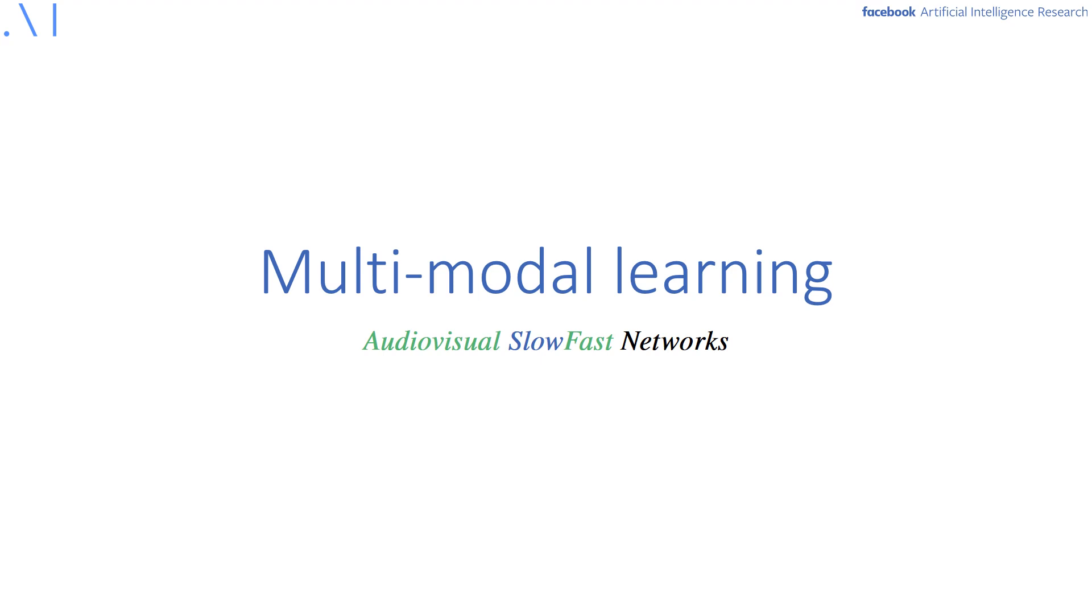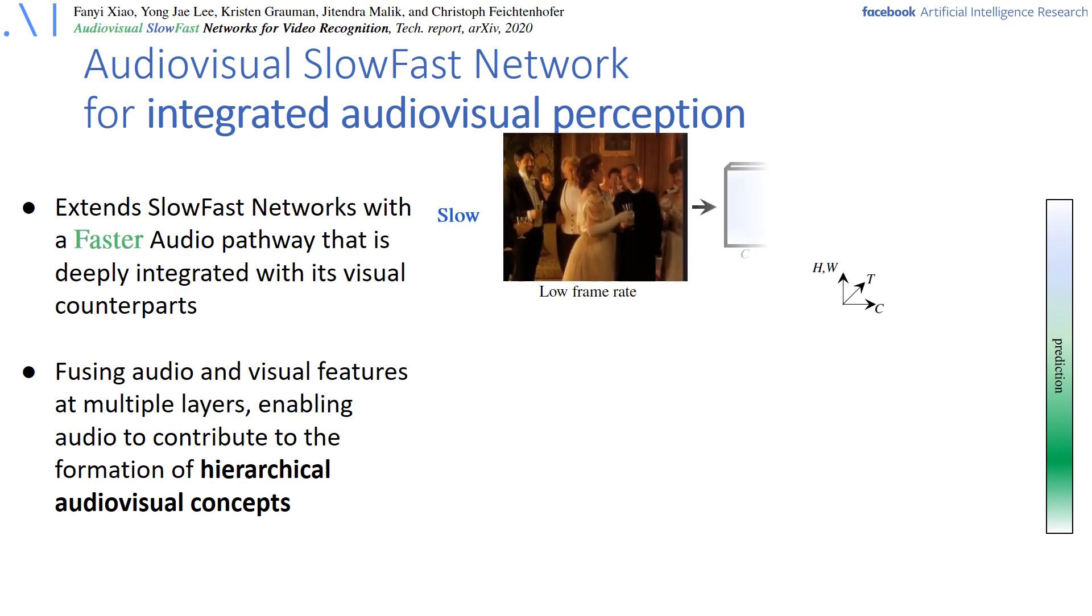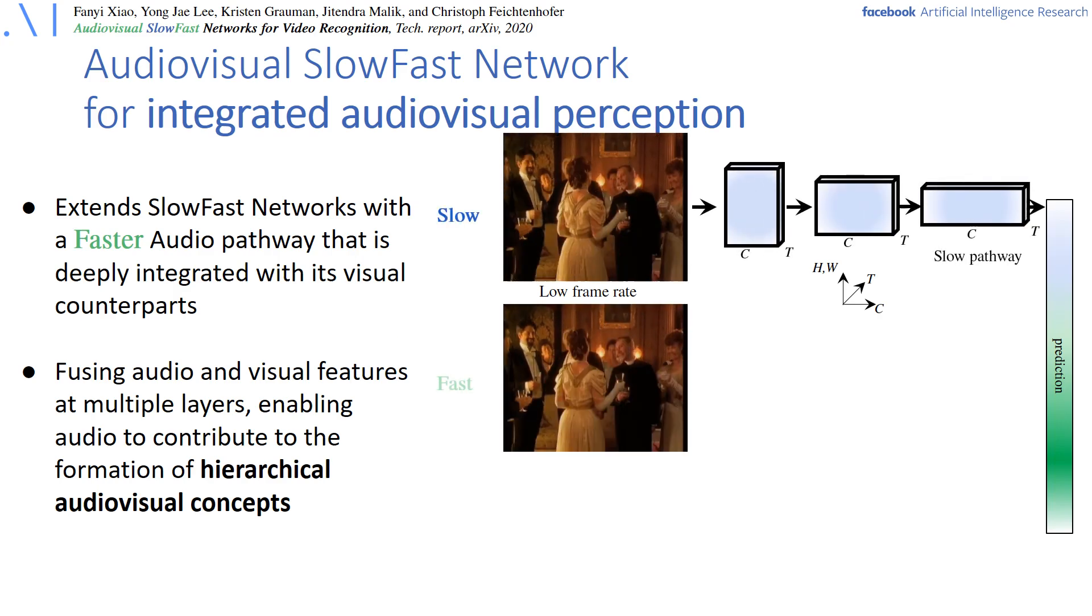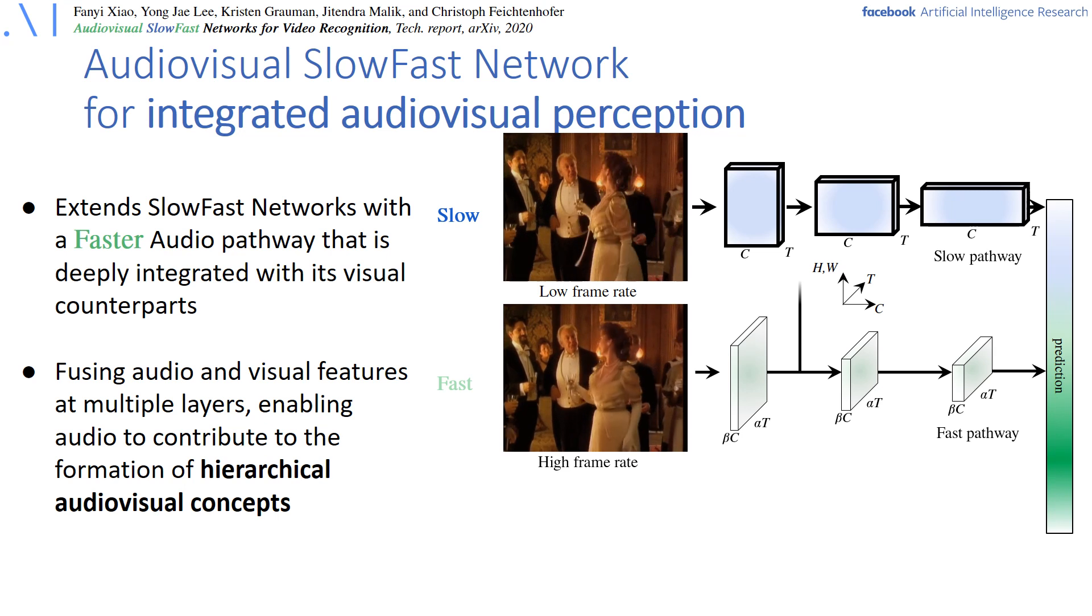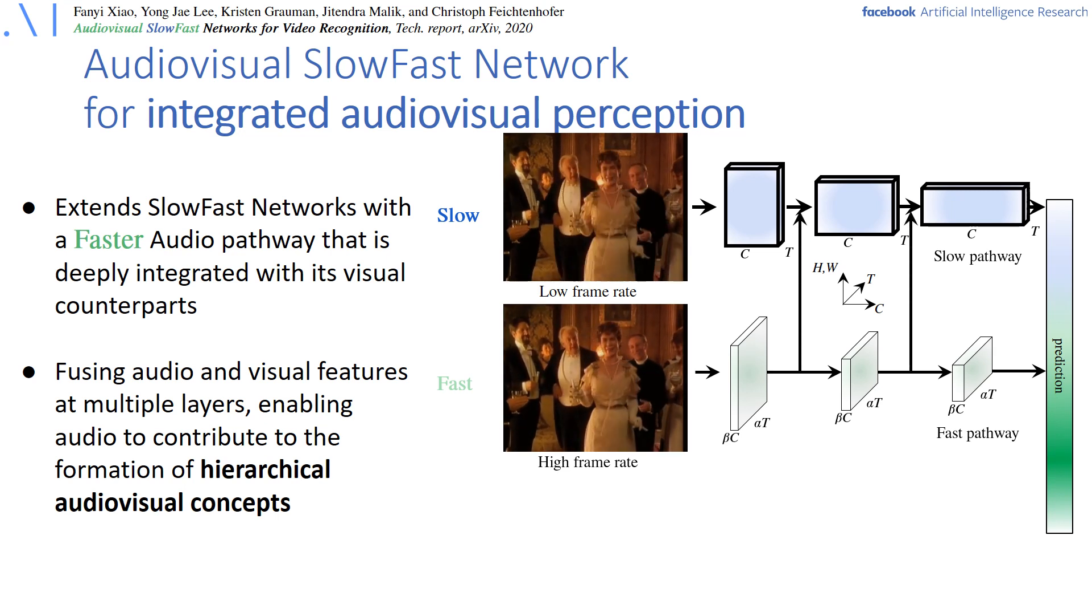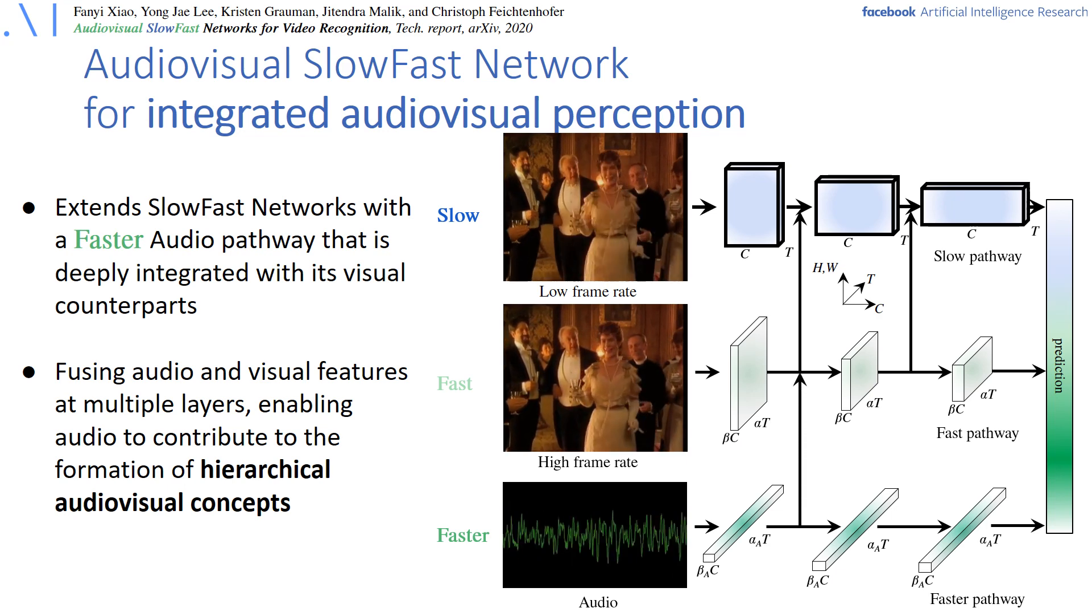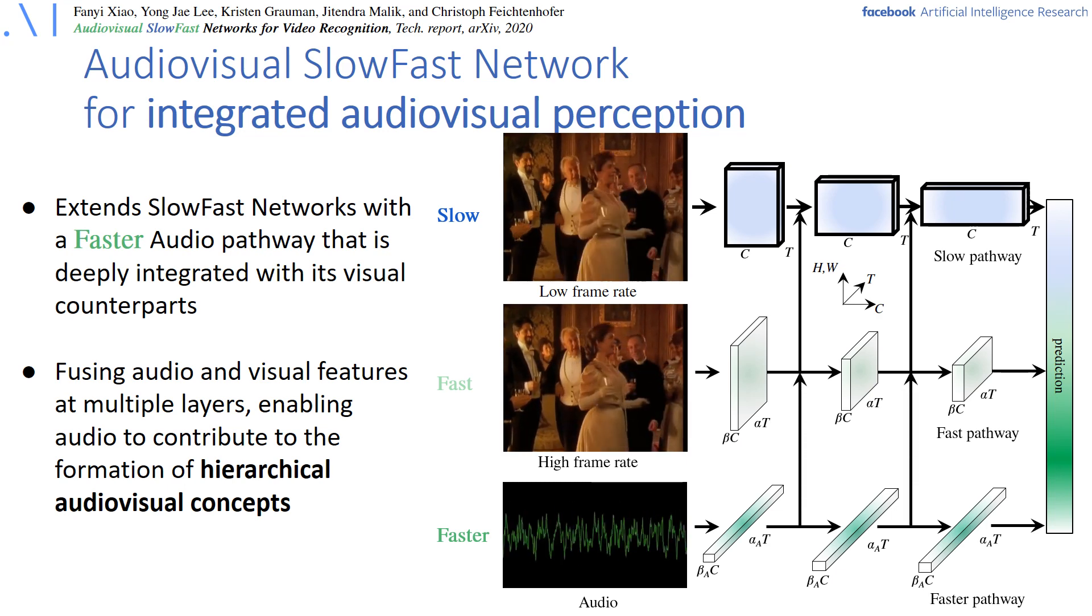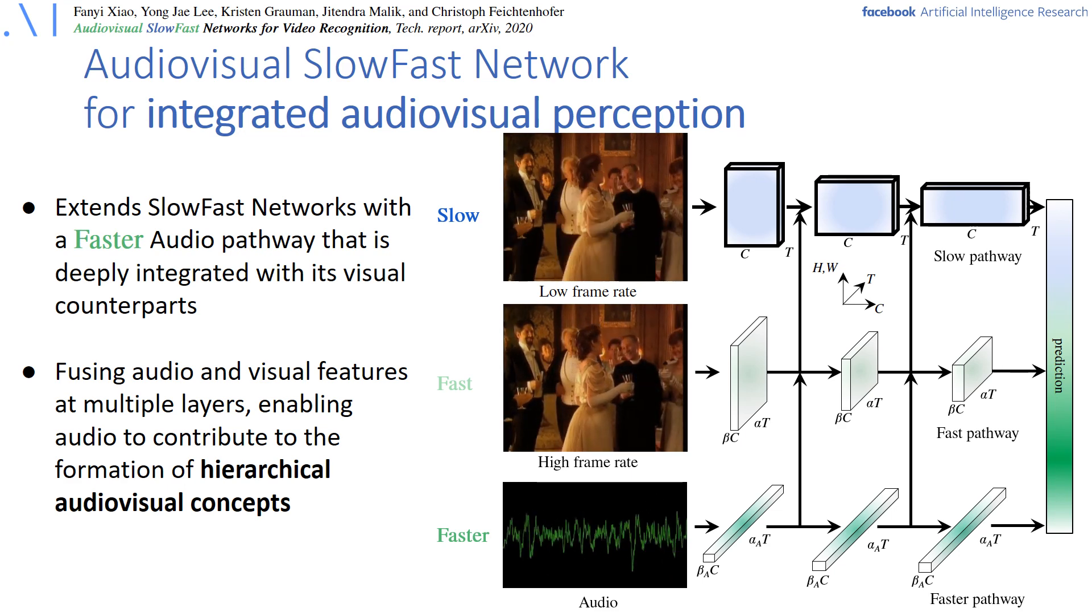Now I would like to move on to multimodal learning with a recent work on audiovisual SlowFast networks. Since video naturally comes with both visual and audio information, it is intuitive to process these modalities jointly, which has typically not been done in previous work that treats the different modalities separately. This motivated us for the following piece of work. The objective of this paper is to build an architecture for integrated audiovisual perception, going beyond previous work that performs late fusion. We proposed audiovisual SlowFast networks that extend SlowFast networks with a faster audio pathway that is deeply connected and integrated with the visual counterparts by fusing at multiple layers.